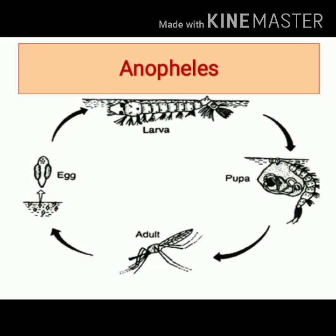The adult mosquito rests at an angle to the surface, as you can note in this image. The life cycle is completed in 7 to 10 days, and the lifespan of the Anopheles mosquito is about 2 weeks.